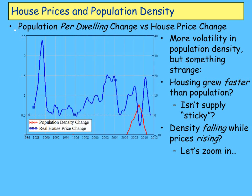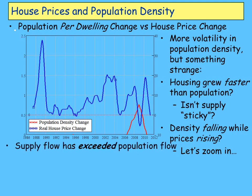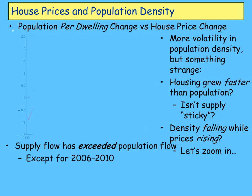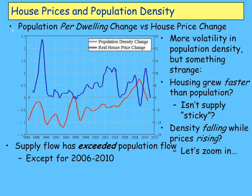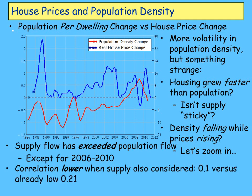There's the red line for change in housing density. Only for that very short period has the level of housing density been rising more slowly than population — that's when supply was outpaced by population increase. Throughout the whole period up to 2006, we've been building houses more rapidly than population has been growing. If the population density argument worked, we should have had falling prices until 2006 and rising prices since. The correlation actually falls to 0.1 — pretty lousy.